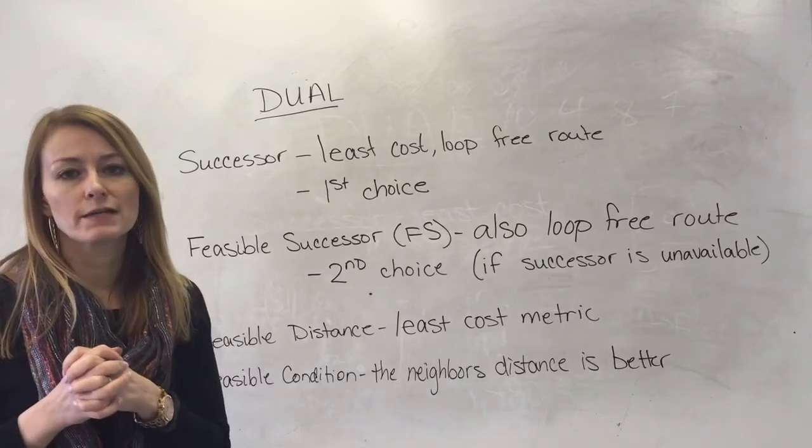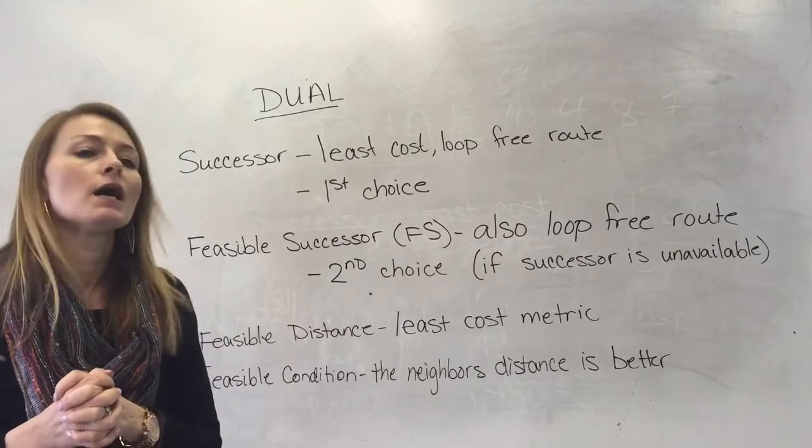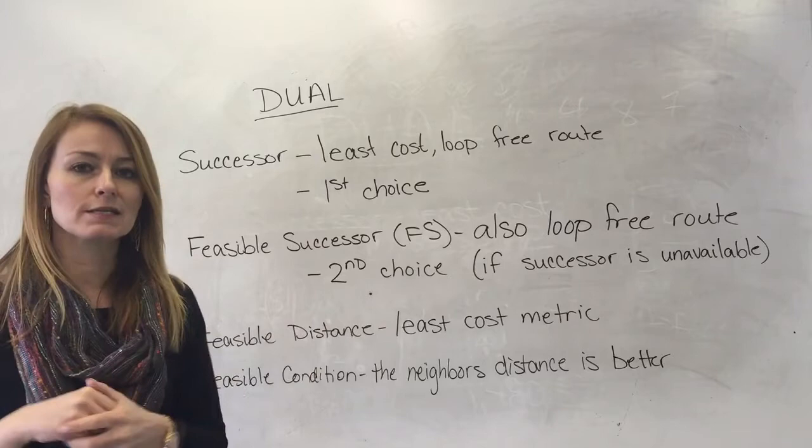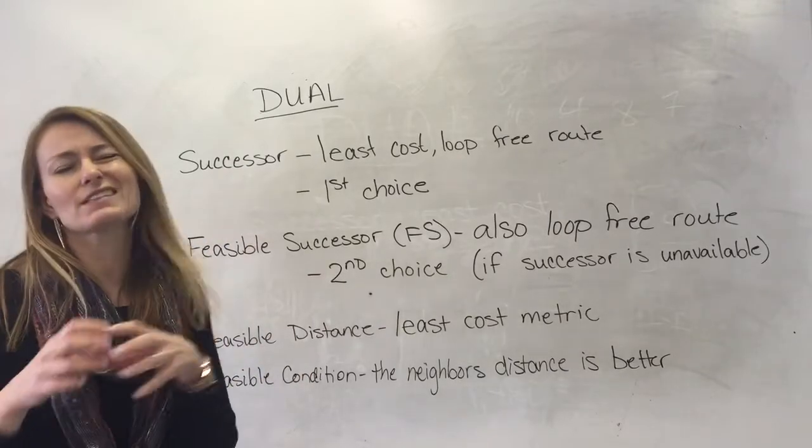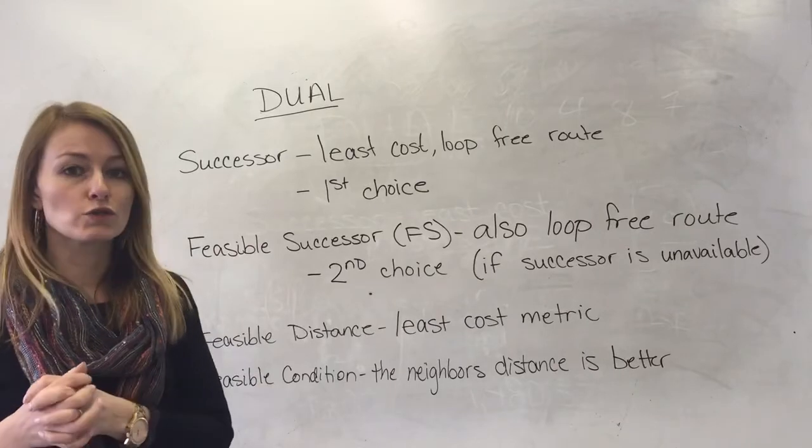Your EIGRP metric is made up of bandwidth and delay - it's a composite metric. So the least cost path to the destination, that's the successor. The successor is the neighbor, where you're gonna go to next.